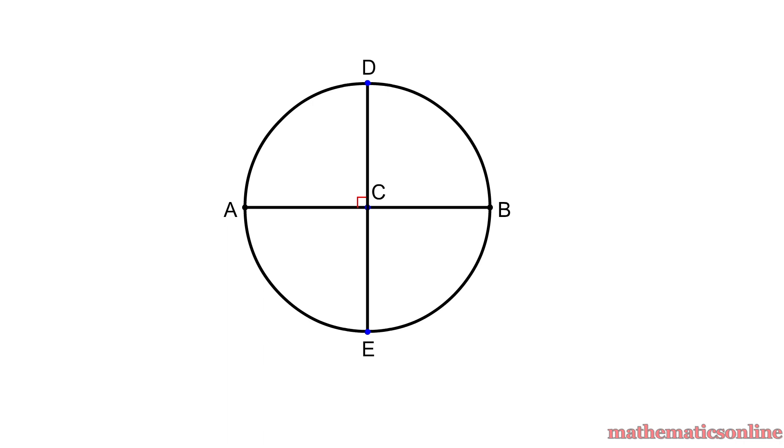If we connect the intersection points of the circle, we create a square which is also inscribed inside the circle.